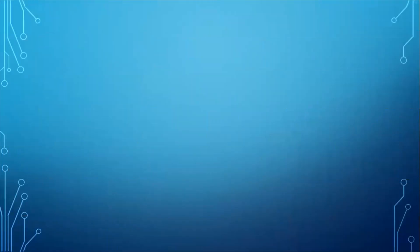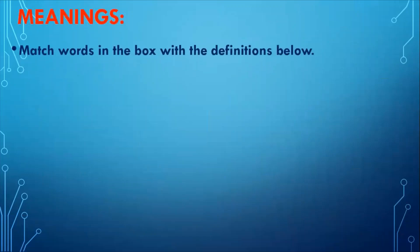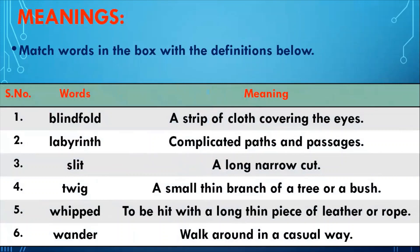Now let's start with some meanings. Match words in the box with the definitions below. The first word is 'blindfold' — a strip of cloth covering the eyes. Second is 'labyrinth' — complicated parts and passages. Third is 'slit' — a long narrow cut. Fourth is 'twig' — a small thin branch of a tree or a bush. Fifth is 'whip' — to be hit with a long thin piece of leather or rope.